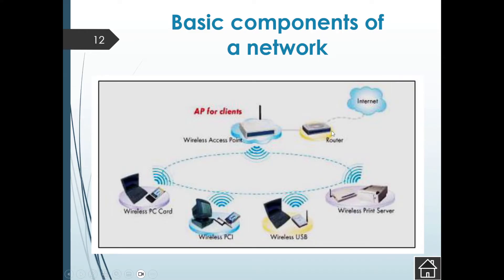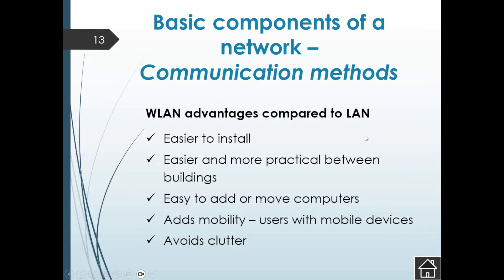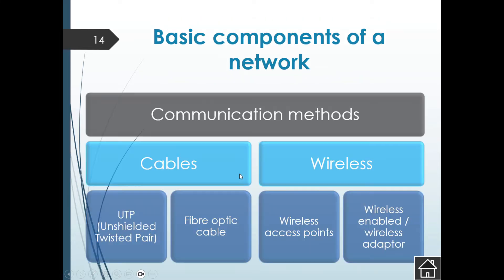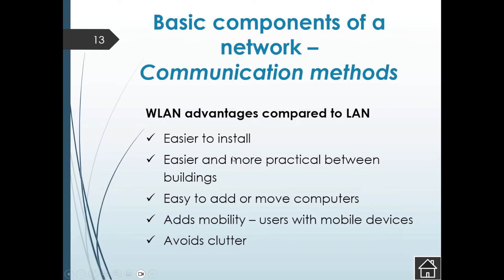At home you might have a router providing wireless connectivity for everyone in the house — that is a network. We know a LAN is our local area network in one geographical area, but we also have wireless LANs, which are easier to install and more practical between buildings. However, there are disadvantages to wireless LANs as well.